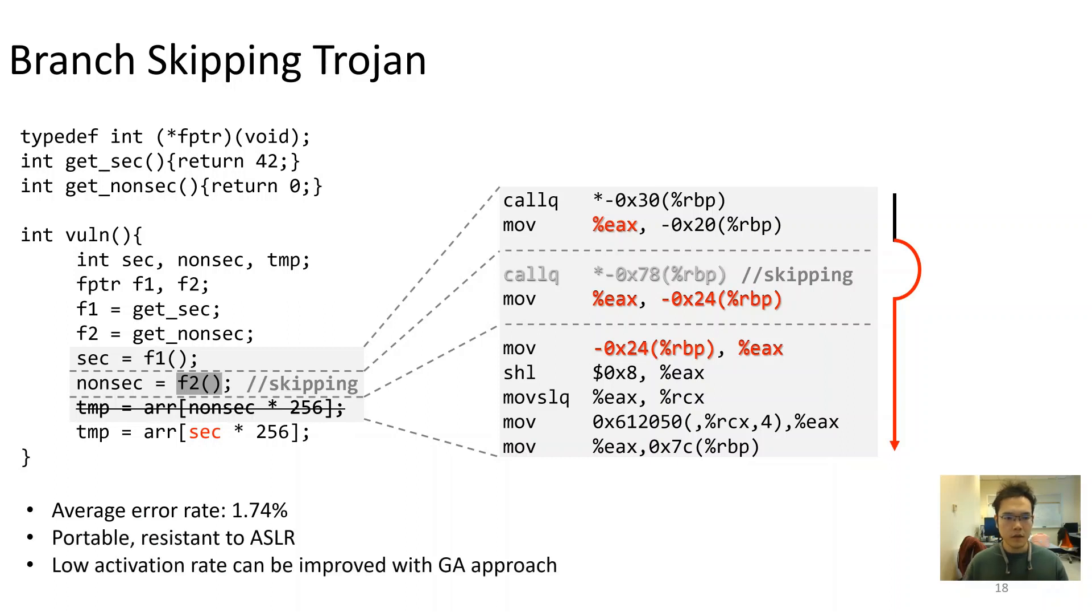In the evaluation, we find skipping-based trojan could also achieve high accuracy. Since the transient execution here is on the deterministic path and does not require a writer branch, this attack is also portable and resistant to address-based layout randomization.